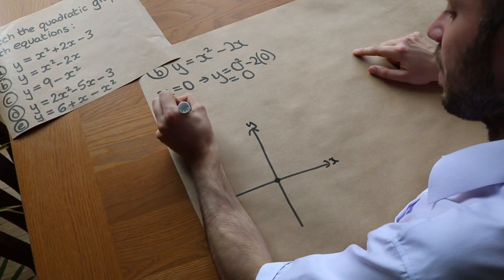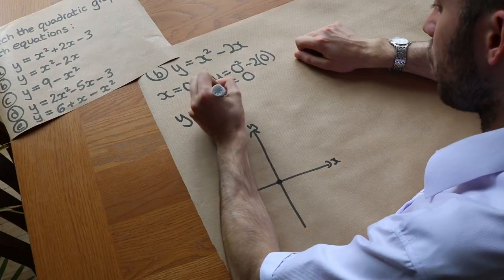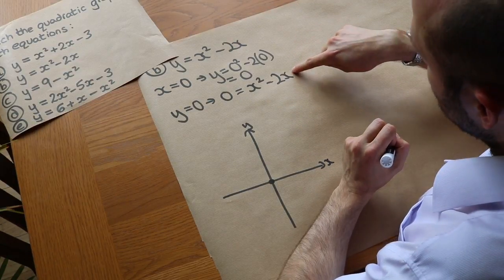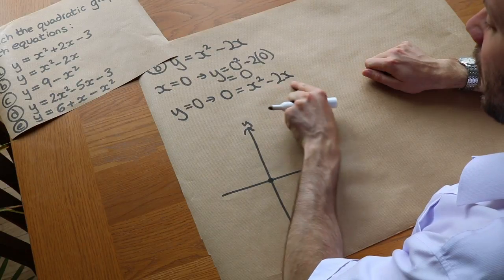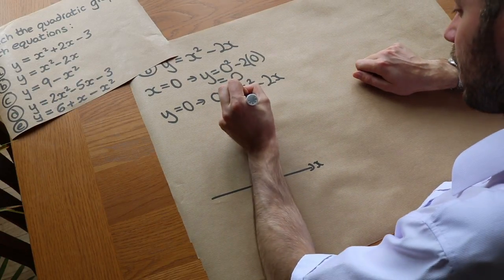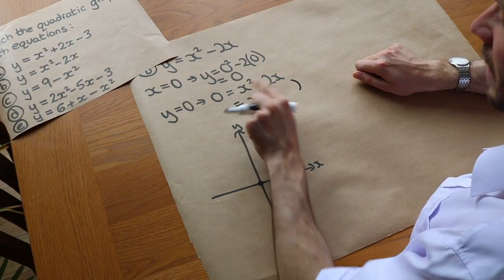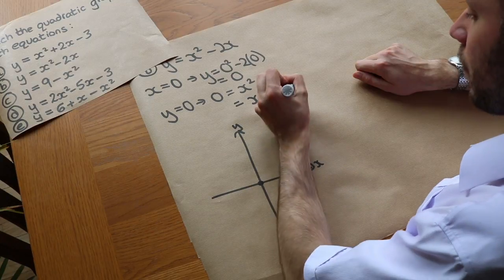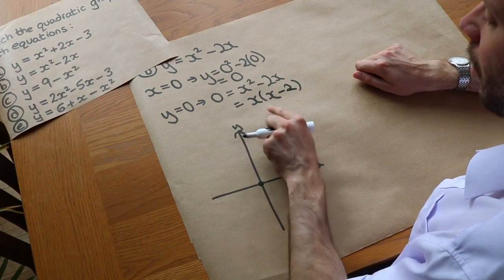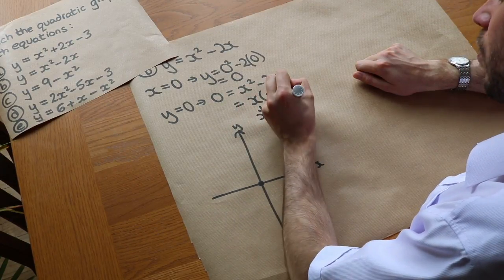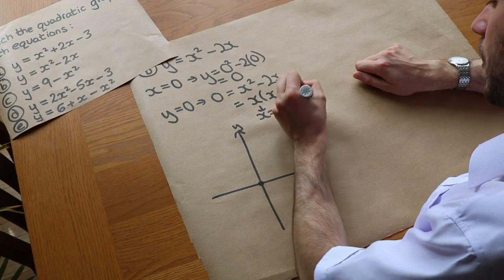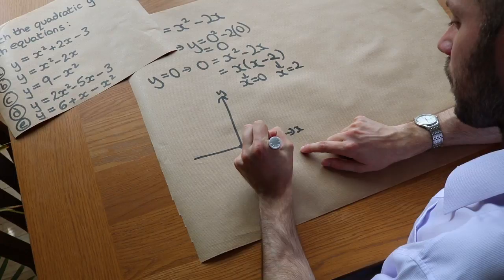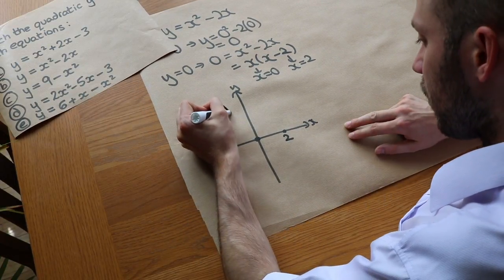To find the x-intercepts, we make y equal to 0: 0 equals x squared minus 2x. Because we don't have a constant at the end, there's a common factor of x, so we factorise out x to get x times x minus 2 equals 0. Either x equals 0 — already at the origin — or x minus 2 equals 0, giving x equals 2. We know it's a smiley face shape, so we draw it going through those points.